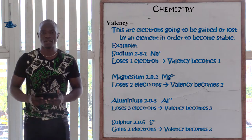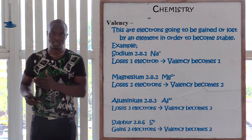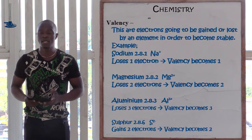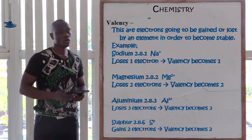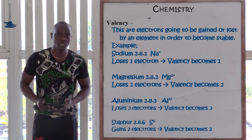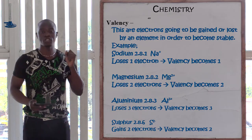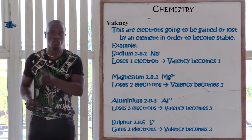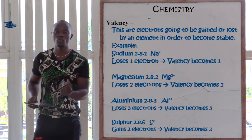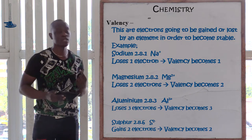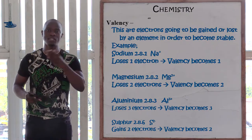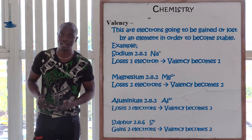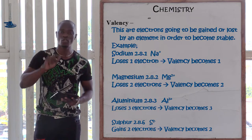Getting back to sulfur: the electronic configuration is 2,8,6, therefore sulfur is going to gain two electrons in order to become stable. We also have oxygen, whereby the atomic number of oxygen is 8. The electronic configuration of oxygen is 2,6. Since it is 2,6, it is easier for oxygen to gain two electrons in order to become stable — 2,8 — than to lose the six electrons. Therefore the valency of oxygen is going to be two negative.